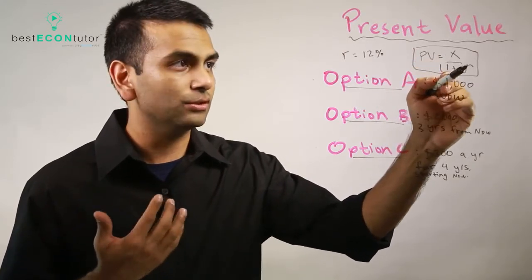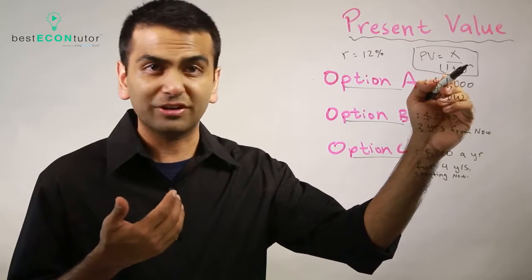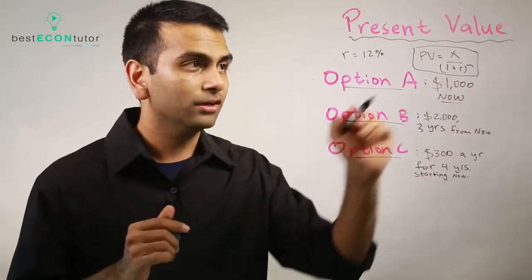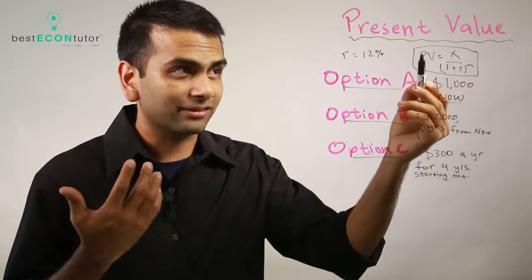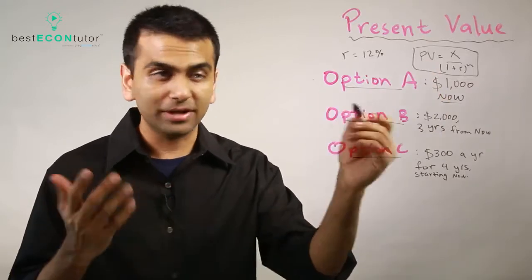Well then the present value of X dollars given to you zero years from now, just plug in zero for N. Anything to the zeroth power is one, so that's just X over one, so it's X. Which means for Option A, the present value is